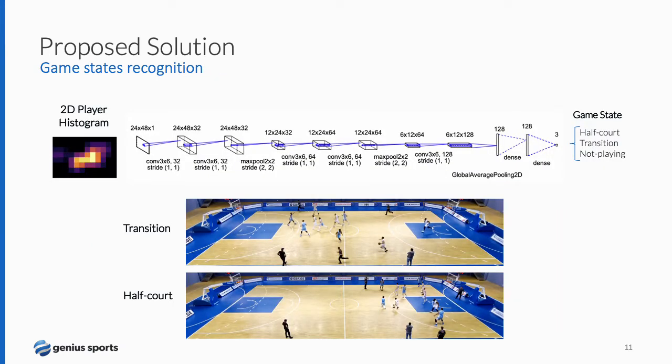The fourth component of our system is game state recognition. We define three states: half-court, transition, and not-playing. These states will guide the final production. We use the player distribution to compute a two-dimensional player histogram that is discretized in 24 by 48 and fed to a neural network composed of convolutional layers and two final fully connected layers. You can see two examples of states: a transition and a half-court.